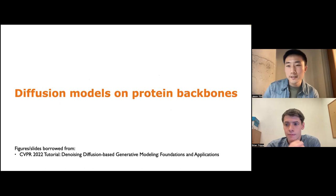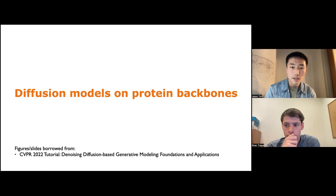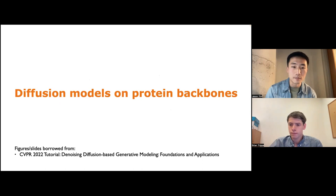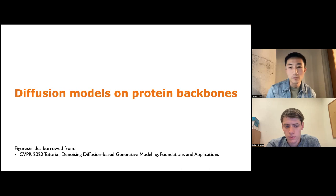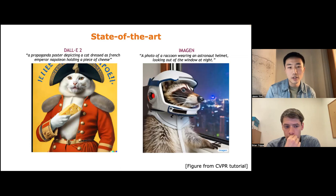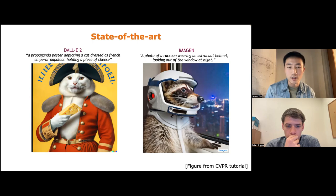Thanks, Brian. I'll start by talking about ProDiff. We'll give background on diffusion models, then discuss how we've adapted the system to work on protein backbones. Some slides are drawn from a tutorial at CVPR earlier this year — check that out for an in-depth description of diffusion models. Diffusion models have popped up all over machine learning in the last year, achieving state-of-the-art in image generation and text-to-image generation. Prominent examples are DALL-E 2 from OpenAI and Imagen from Google AI, which produce very accurate and high-quality images.